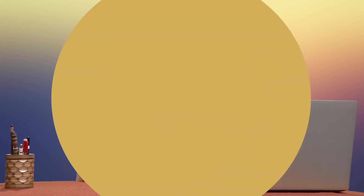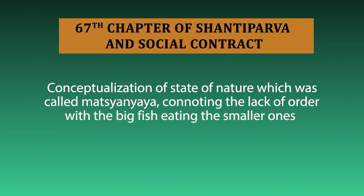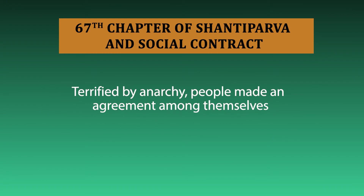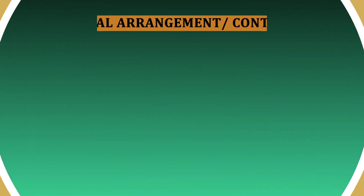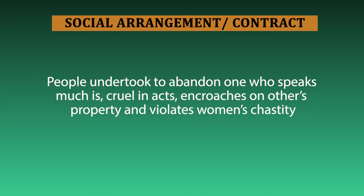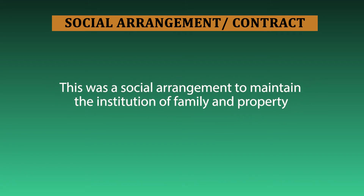The second theory in the 67th chapter of the Shanti Parva is more precise and clear. It starts with the conceptualization of the state of nature called Matsyanyaya, connoting the big fishes eating the smaller ones. Terrified by anarchy, people made an agreement among themselves. They undertook to abandon one who speaks excessively or is cruel, and chose a person who is righteous, who would not violate women's chastity, who would not take away others' property. They formulated a social arrangement to maintain the institution of family and property.